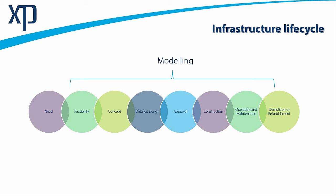Once we have fixed our concept option, we go to detailed design, where a set of documents is produced and goes to approval. After approval, it goes to construction and becomes a live asset. Once live, it is handed over to the operation and maintenance team. Eventually the system reaches end of life and goes into either demolition or refurbishment. If refurbishment, we go back to feasibility and think if it is feasible to refurbish, then concept and detail design again. If not, we remove it and perhaps build a new one.